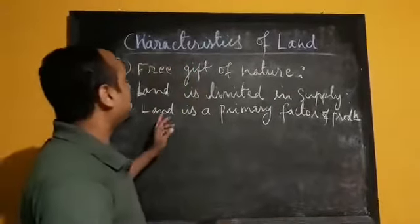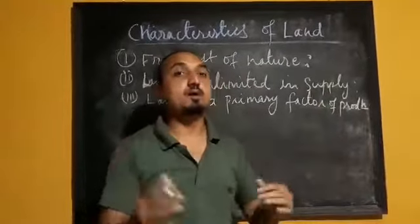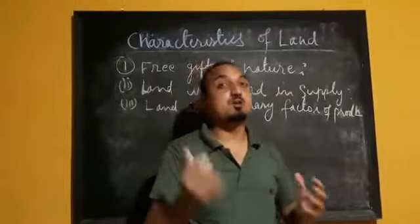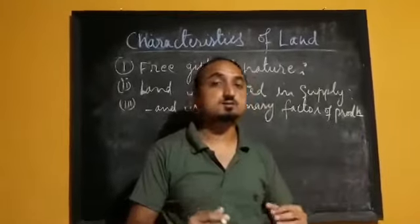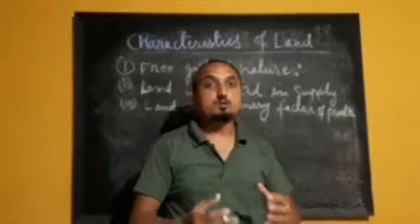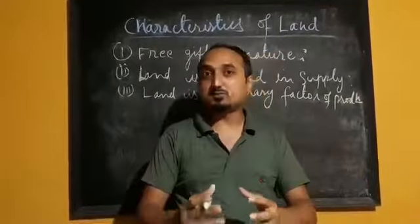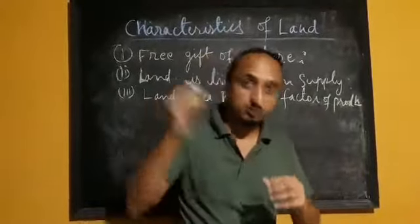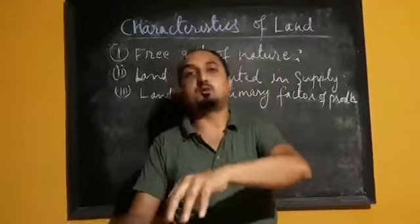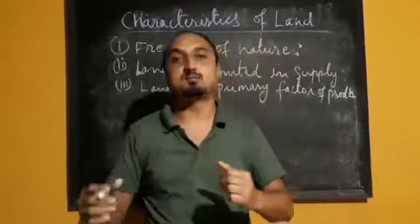The third characteristic: land is a primary factor of production. Why is land called a primary factor of production? This is the peculiar characteristic of land because we have to make use of land to produce anything, or for any other factor of production to be used. We have to use all factors of production on land, then only production may take place.